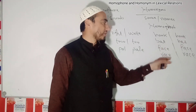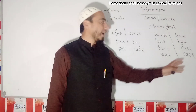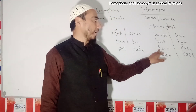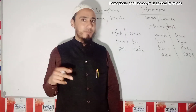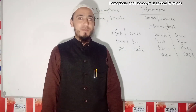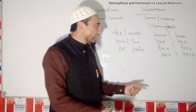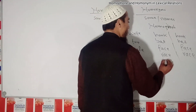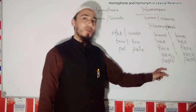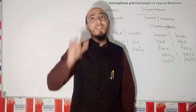Then we have 'race' and 'race' — here, race refers to a contest, and there, this race refers to an ethnic group. Same is the case with 'face': one face refers to the human face, while another face refers to facing a problem — for example, we say 'you are facing a problem, hardships,' etc. Another example: we have 'pupil' — one pupil refers to a student at a school, while another pupil refers to a part of the human eye.